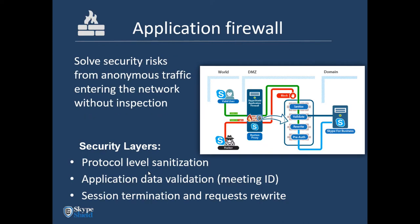The application firewall sanitizes anonymous traffic entering the network. It validates parameters — type, number, destination URI, headers — similar to typical firewalls but with specific orientation to Skype, since we have learned the protocol and know exactly what is expected. Anything outside of that is blocked in the DMZ. We also do application data validation, validating the meeting ID to avoid non-relevant requests entering your network. Finally, we terminate the session and rewrite the request, ensuring only legitimate traffic is allowed into the network.